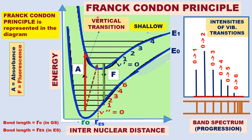This is the potential energy curve for the excited state. Comparing the two curves: the ground state potential energy curve is very deep, while the excited state potential energy curve is shallow. The potential energy is less for the excited state. The ground state is more stable, so the potential energy curve is also deeper.